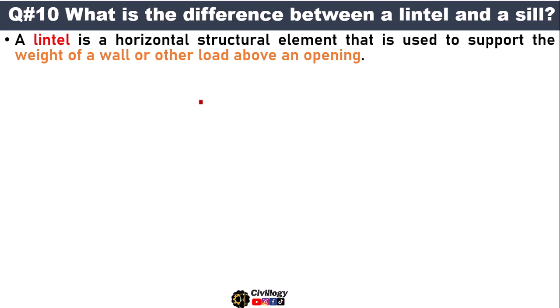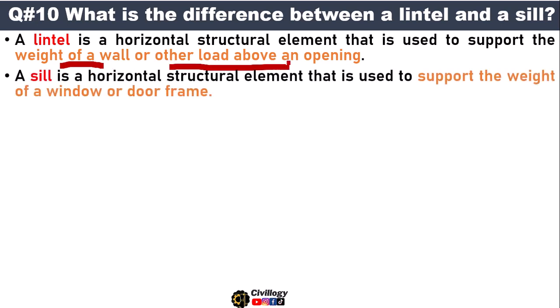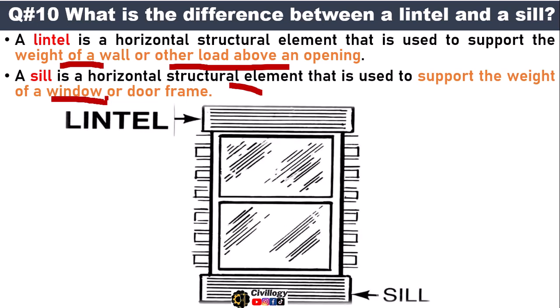Question number ten: what is the difference between a lintel and a sill? A lintel is a horizontal structural element that is used to support the weight of a wall or other load above an opening — also called a lintel beam. Whereas a sill is a horizontal structural element that is used to support the weight of a window or door frame; it is the bottom level of the window.